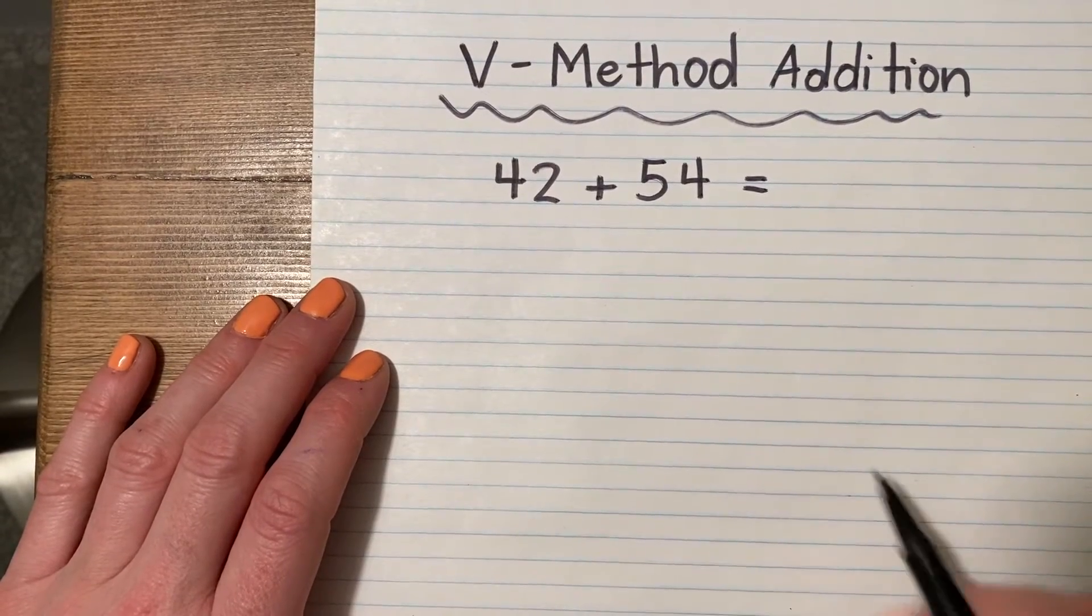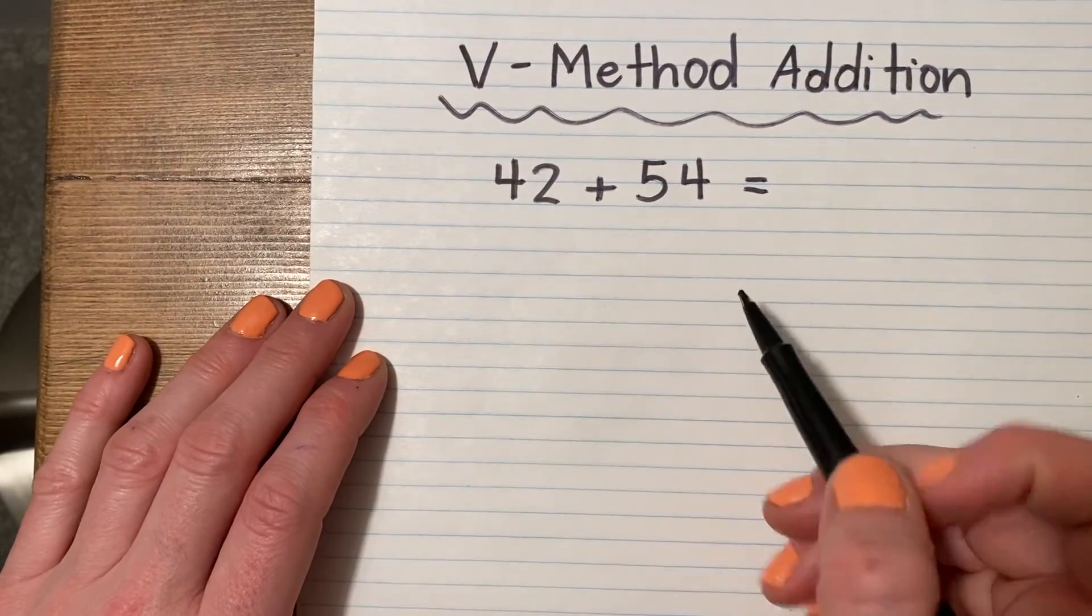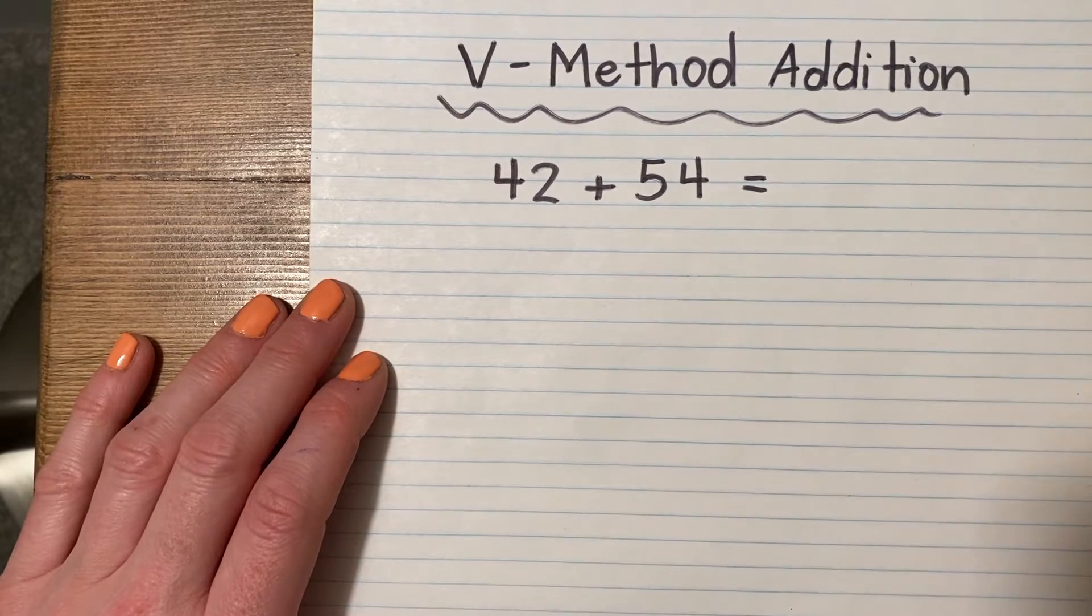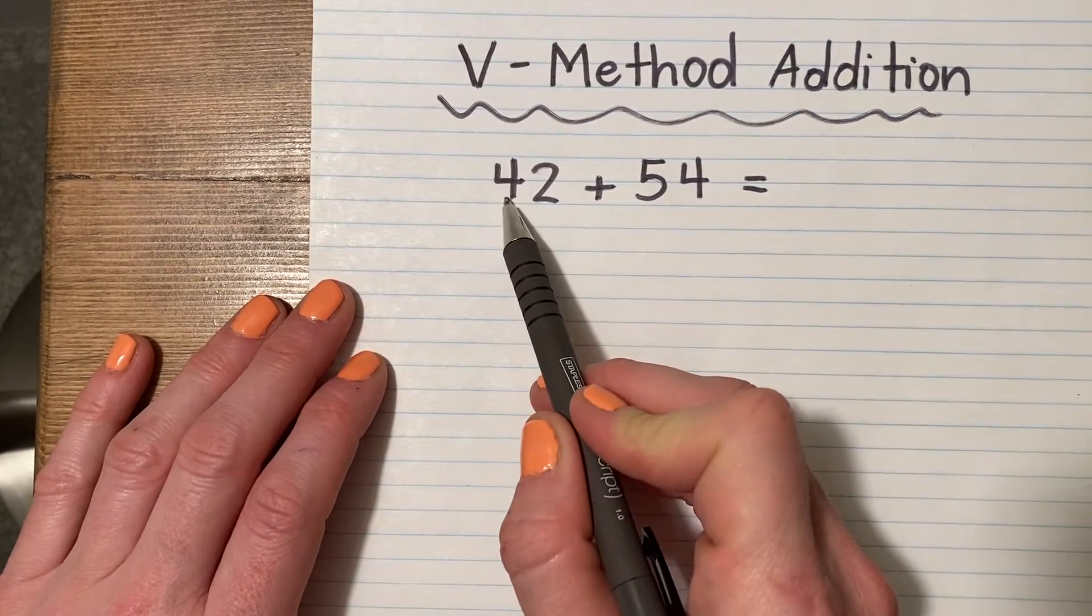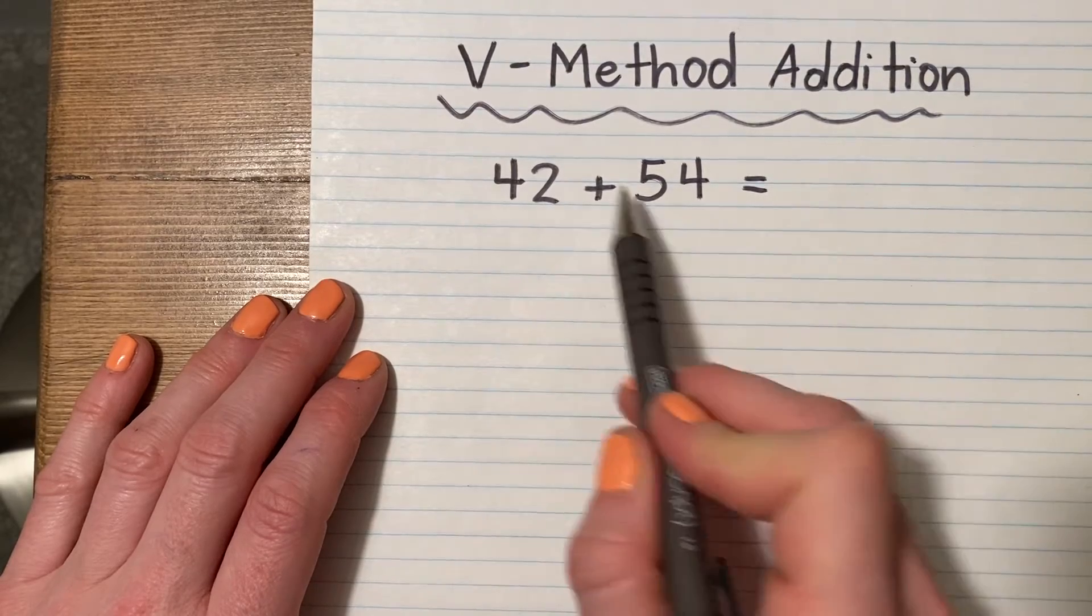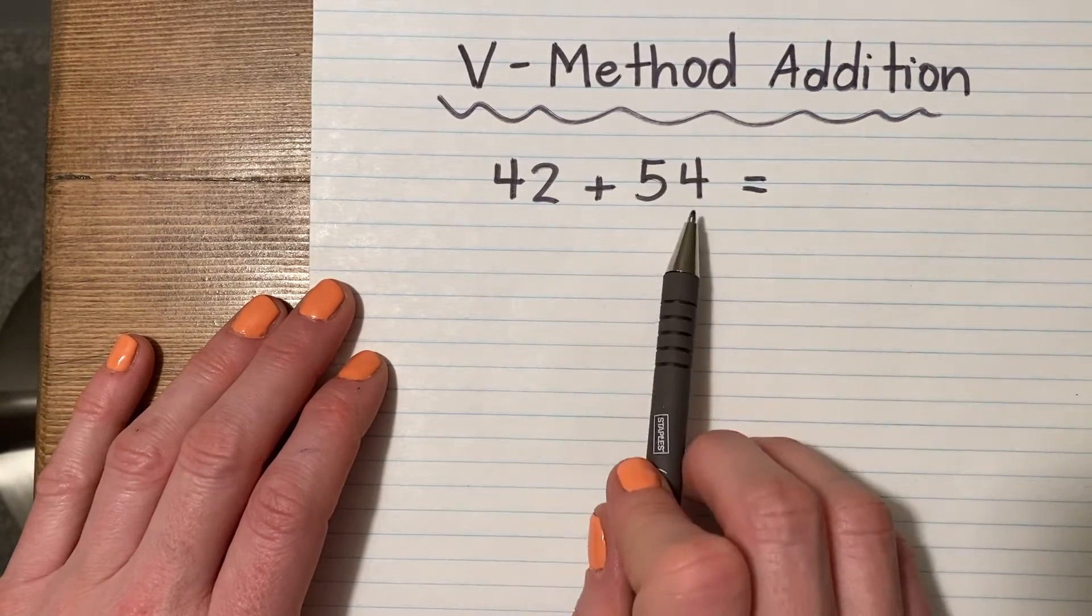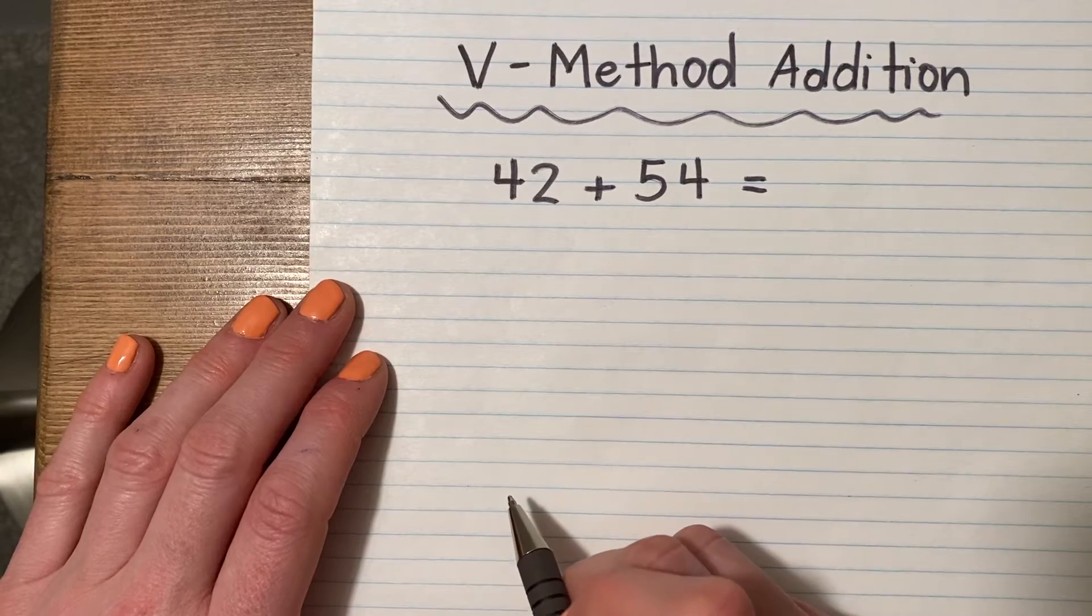I want to talk a little bit about the V method addition strategy. So say if you have 42 plus 54, it's easy if you line them up like this across a line instead of stacked. It's much easier to do the V method this way.